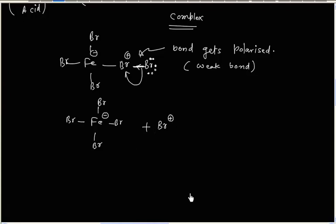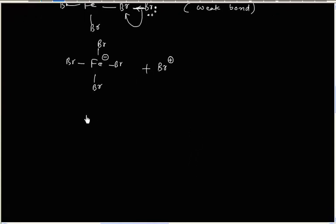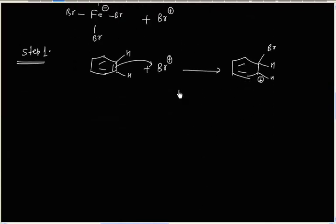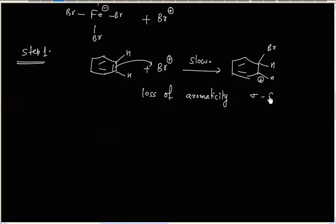In the next step, Br⁺ acts as the electrophile. The benzene ring attacks Br⁺, and a sigma complex is formed. This step is slow because we are losing aromaticity.